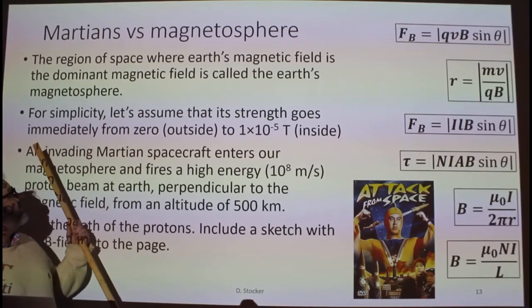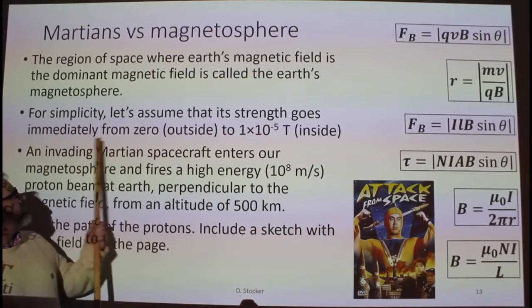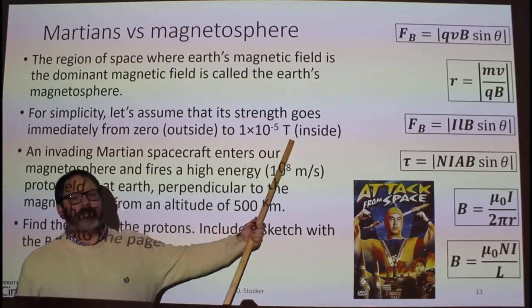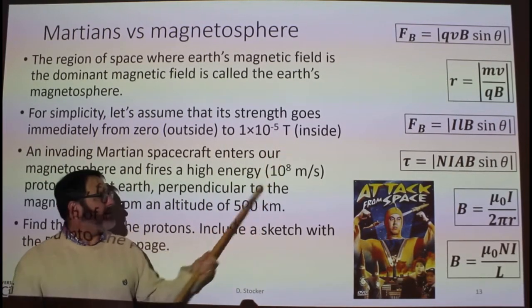For simplicity, we're going to assume that the Earth's magnetosphere goes from zero magnetic field suddenly to 1 times 10 to the minus 5 Tesla inside the magnetic field.